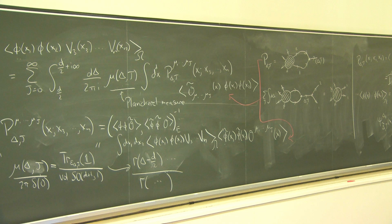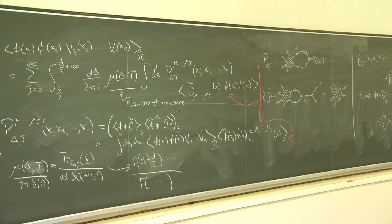The conformal partial wave psi is a solution to the conformal Casimir equation. The reason is that if we hit it with the Casimir acting on points 1 and 2 simultaneously, the Casimir hits the three-point function. When a conformal generator acts on these two points, it's the same as the generator acting on the internal point, up to a minus sign, because the function is conformally invariant. So the Casimir acting on these two points is the same as the Casimir acting on the internal operator, giving the same eigenvalue. This thing is an eigenfunction of the conformal Casimir equation — it's almost like a conformal block, but it has a different boundary condition.